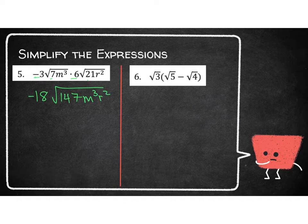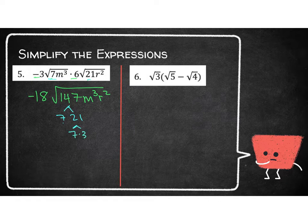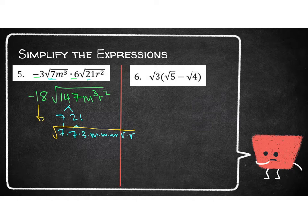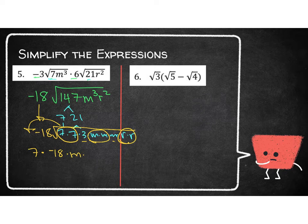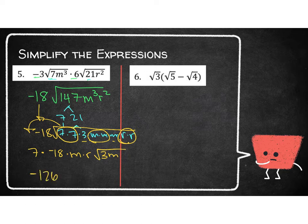Now I need to break down the inside. That 147 we know is 7 times 21, and 21 is 7 times 3. So I have 7, 7, 3 underneath. M to the 3rd is m, m, m, and r squared is r times r. The pairs I've got are a pair of 7s, a pair of m's, and a pair of r's. I'm left with a 3 and an m. So I have 7 times the negative 18 times m times r, with 3m left over. That's negative 126mr times the square root of 3m.